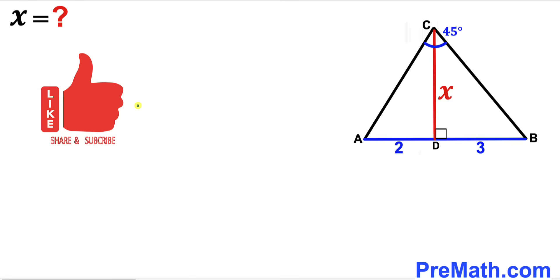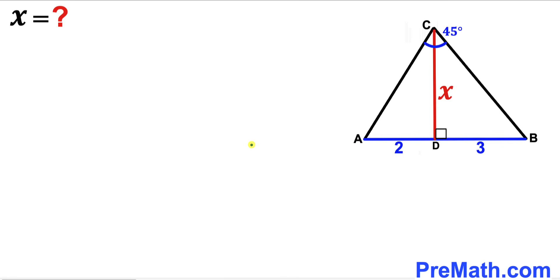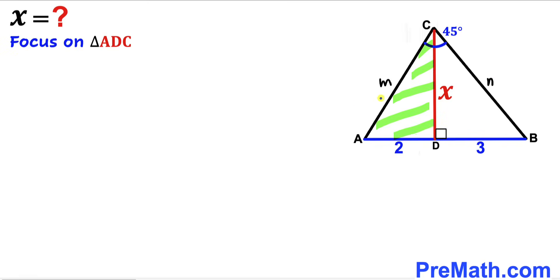Please don't forget to give a thumbs up and subscribe, and please keep in mind that this figure may not be 100% true to scale. Let's get started. I'm going to label side AC as lowercase m and side BC as lowercase n.